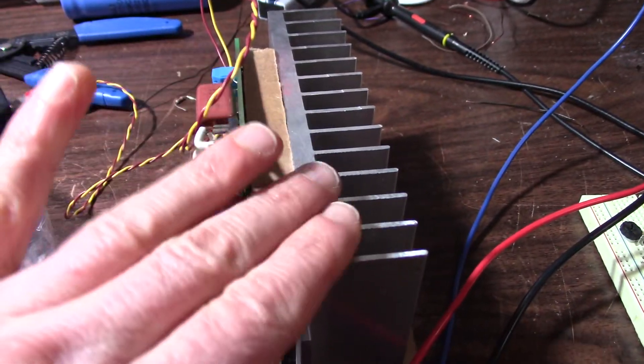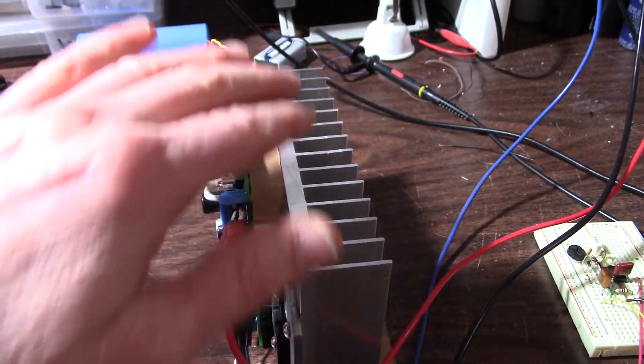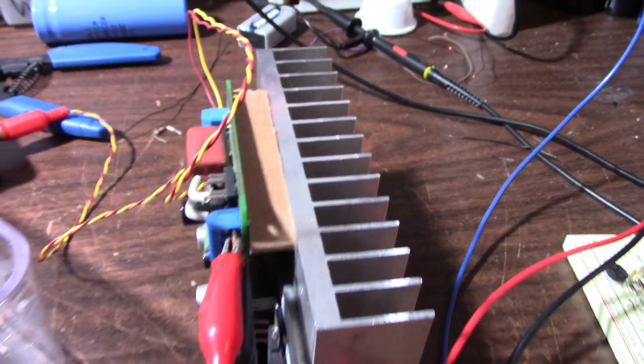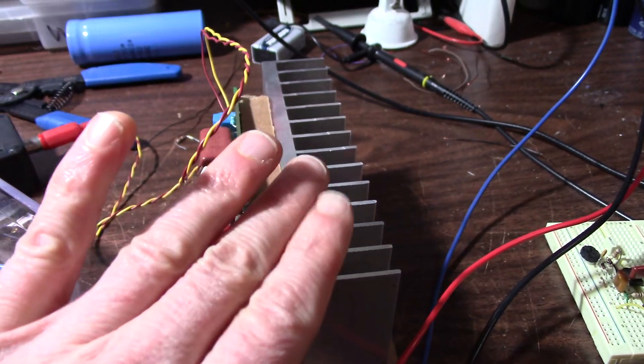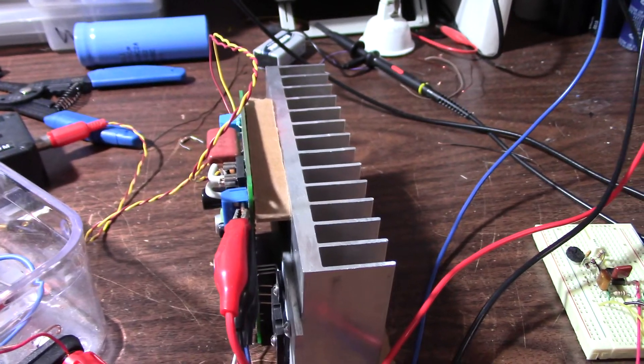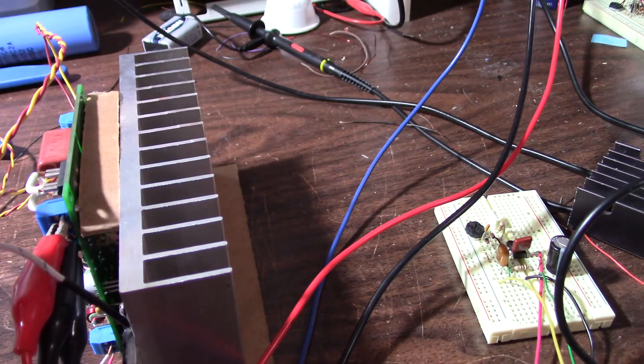When you design an amplifier you want to design it so the heat sink does not exceed 60 degrees Celsius. They say that's where you can hold it, it's getting pretty hot. You should be able to put your finger on it for about a second. So let me take a temperature here.